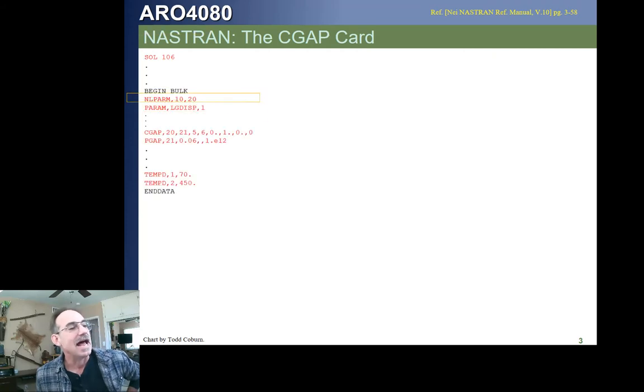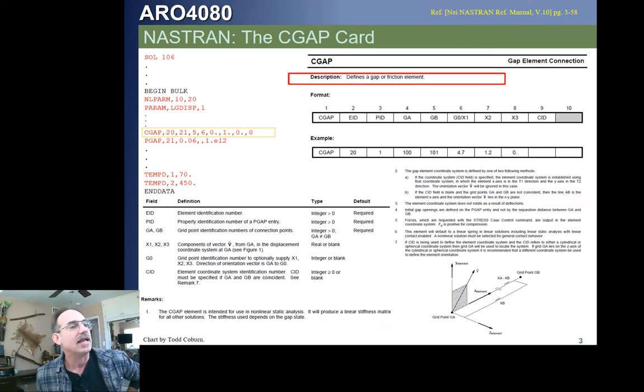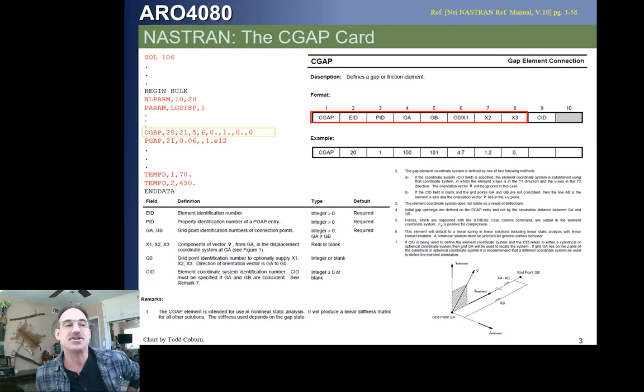Here again is our deck and here is the CGAP card. I have bracketed in red what's required for us. We're going to be calling out the CGAP card. We're going to give it an element ID. This is just like, it doesn't tie back to the case control because it's just like any other element. It's a connectivity card.